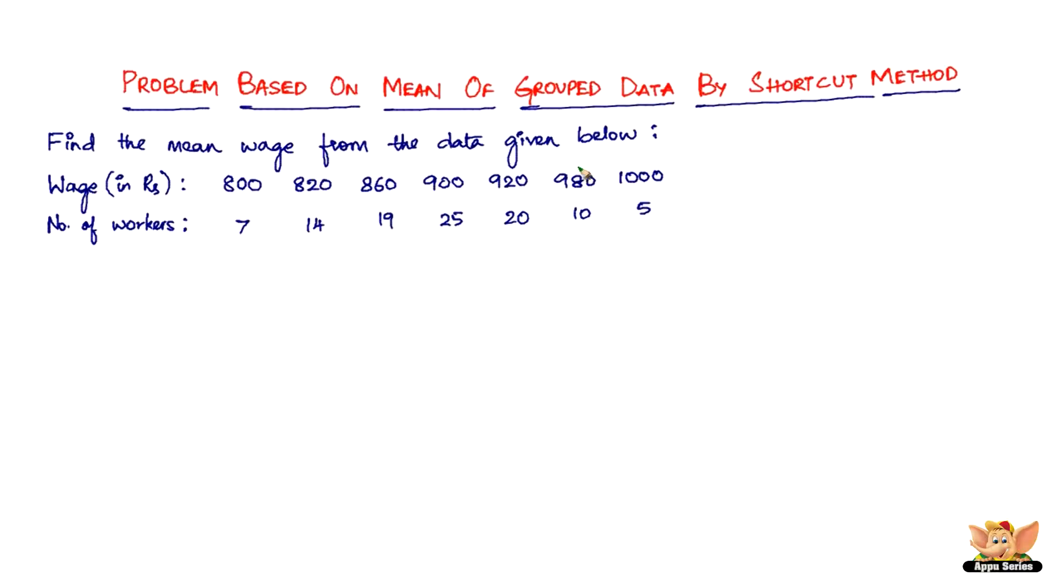So this is the distribution that we have and we have to find the mean, but these are really big numbers, right? Using direct method is not going to help. Not that we won't get the answer, but it's going to be tedious, so let's use the shortcut method.